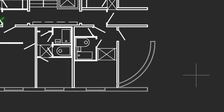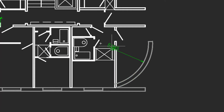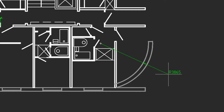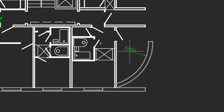It also works on curved objects, like this arc. I'll select the arc, and this time you'll notice there are a couple of options about where to place the dimension. I can place it outside, and there's a leader line that goes all the way to the center point, or I can place it on the inside, and there's a shorter line. Click to place it.